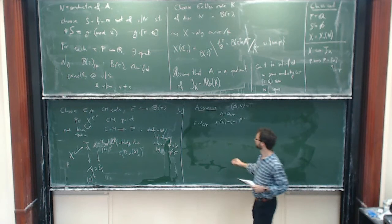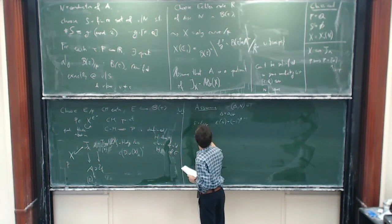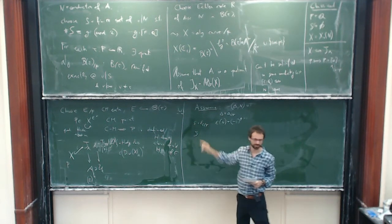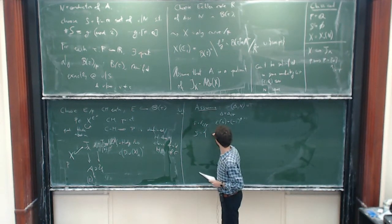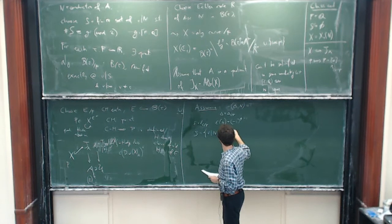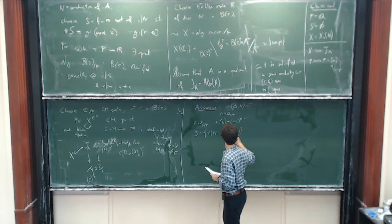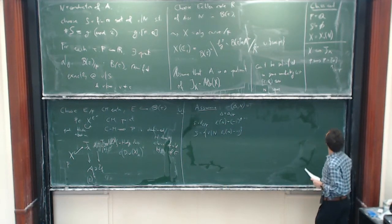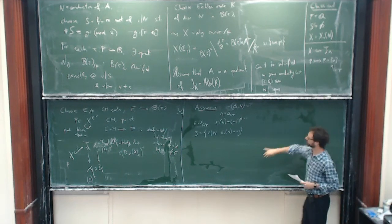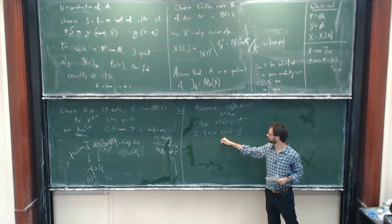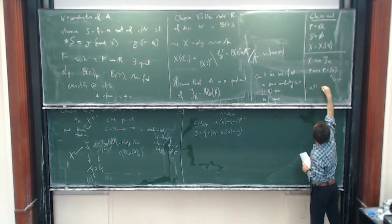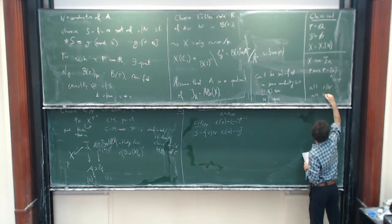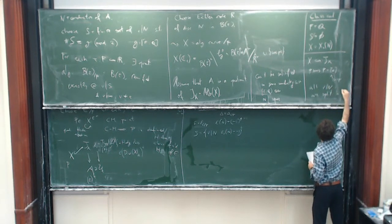I also assume the following: if epsilon denotes the quadratic character of E, then epsilon(N) equals minus 1 to the power of G minus 1. The set S is defined as the set of V dividing N such that epsilon_V of N equals negative 1. In the case of Gross-Zagier, S is empty, which means that all V dividing N are split in E.